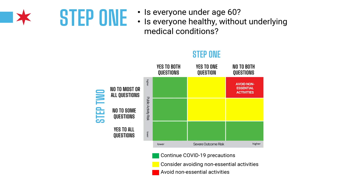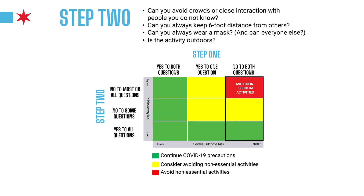So let's put this all together. Let's say in step one I'm under 60, but I live with someone who's over 60 and has an underlying medical condition — that puts me in this higher risk category for severe outcome. So I'm going to think really carefully about step two in the activity. Let's say I cannot avoid crowds, I cannot keep a six-foot distance, I cannot always wear a mask, and the activity is not outdoors. In that case, I would be in this upper red portion where I should be avoiding non-essential activities at this point.